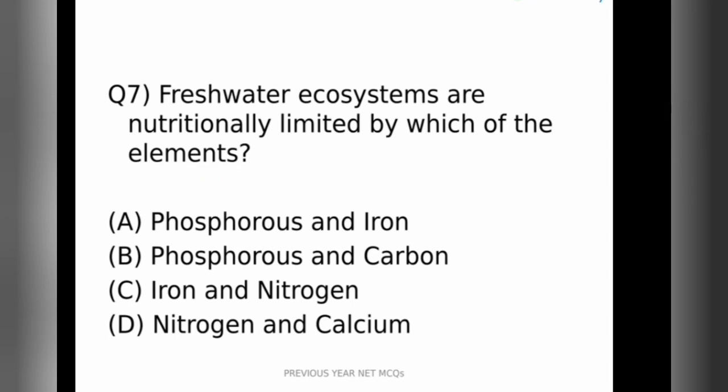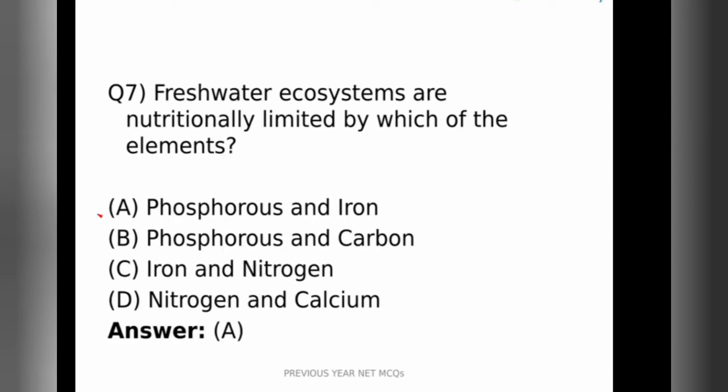The correct answer is option A, Phosphorus and Iron. So Phosphorus and Iron are limited in fresh water ecosystem. But in case of marine ecosystem they are present in adequate amount.